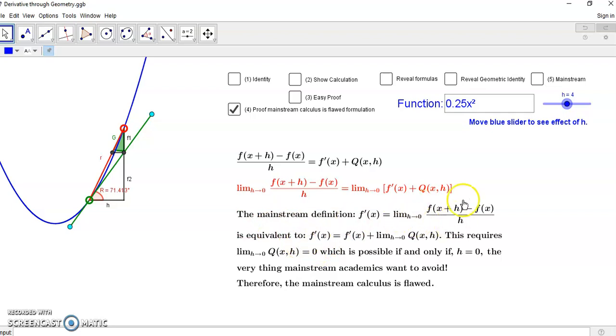So what essentially happens is that this definition boils down to the derivative is equal to itself plus the limit of this difference going to zero. But this is a constant for any given x and h, it's a constant.